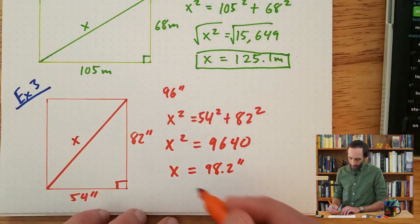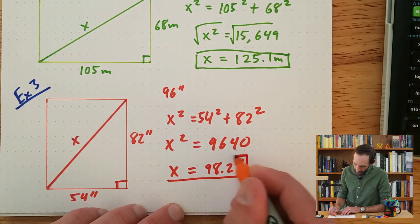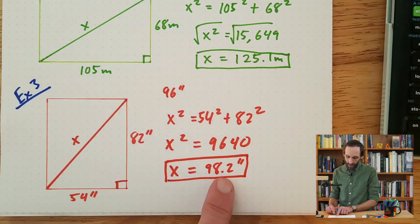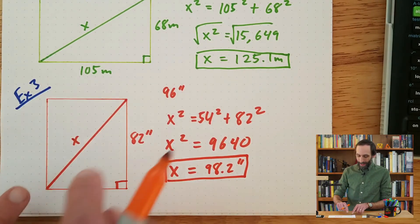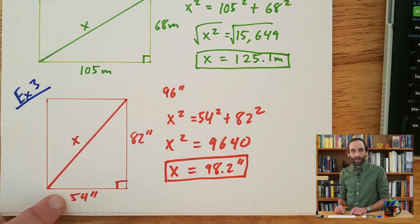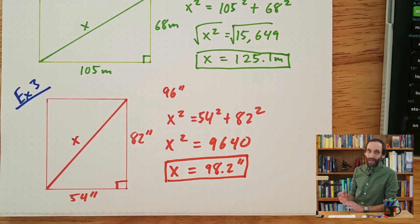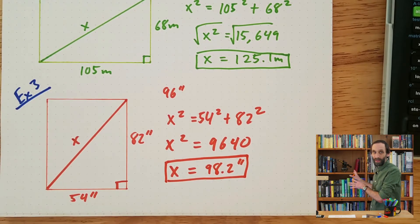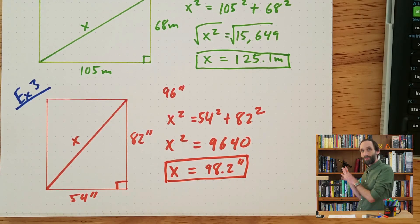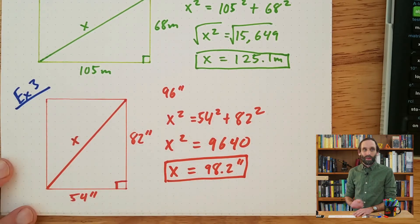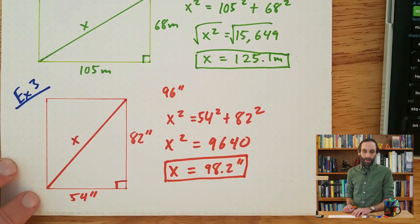What does that mean? Since the height of the ceiling is 96 inches and the diagonal of the bookshelf is 98.2 inches, that means I cannot rotate this bookshelf on its side to carry it through the door. So what did I end up doing? I partially disassembled it — there's a top half and a bottom half that can come apart — and I moved it in two pieces and reassembled it. I knew I had to do that because I used the Pythagorean theorem to find that diagonal height.